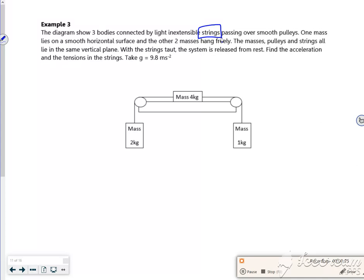System is released. So I've got 2g acting down here. Now this tension here will be different to the other tension. I've got 4g acting down and I've got R. I only really need R when I'm working out friction. Then I've got 1g acting down here. Now different string, different tension.